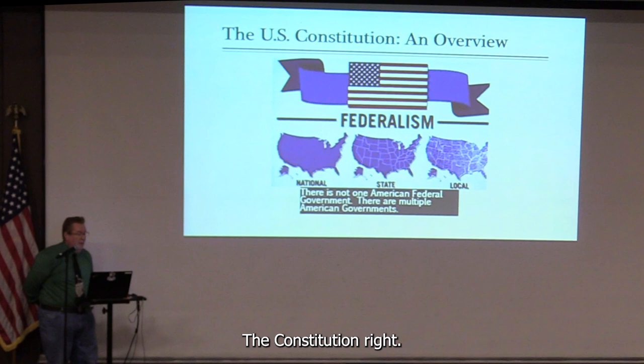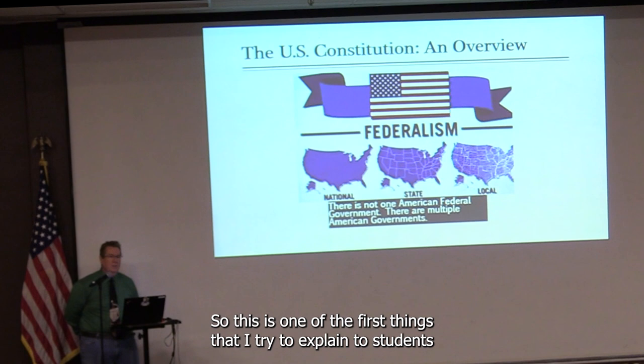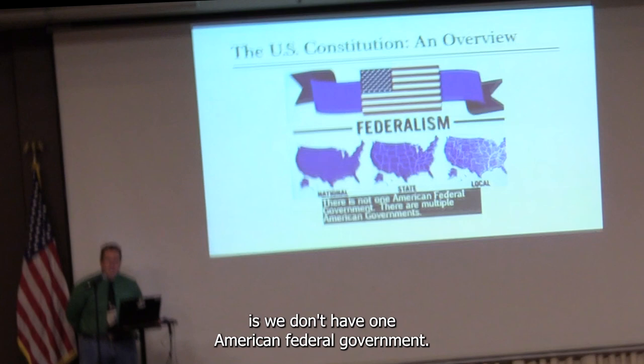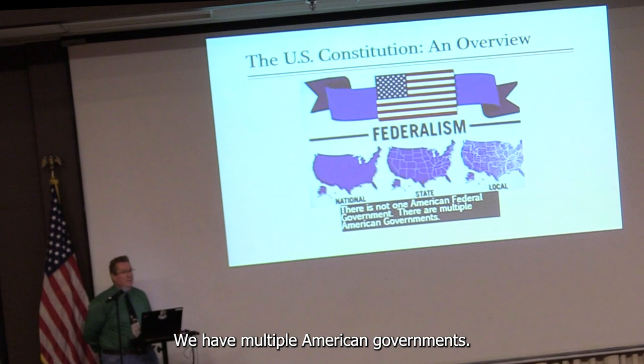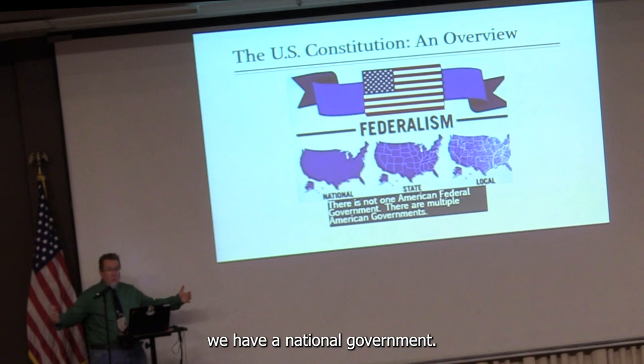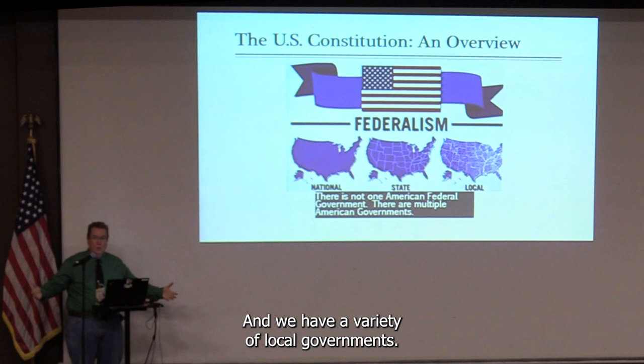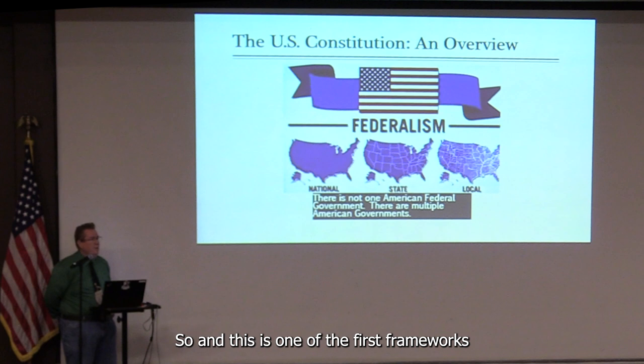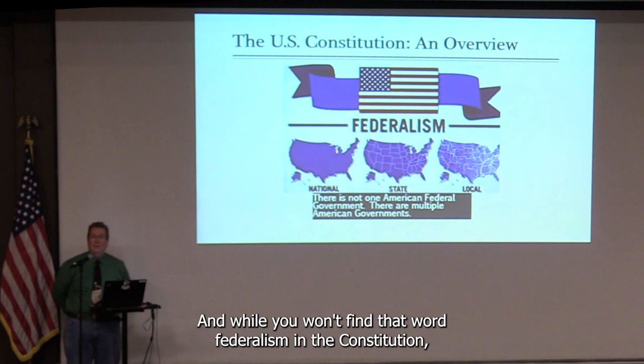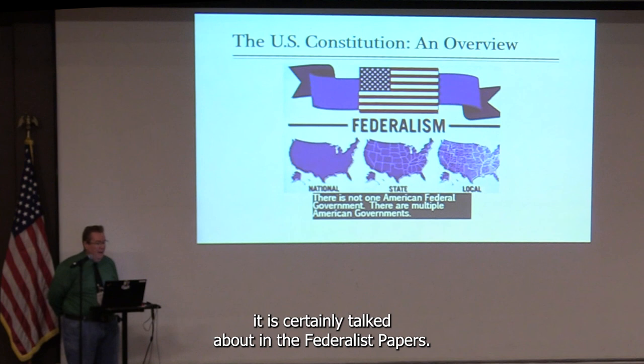The Constitution sets up a framework of multiple governments. We don't have one American federal government — we have multiple American governments. In broad terms, we have a national government, state governments, and a variety of local governments. While you won't find the word 'federalism' in the Constitution, it is certainly discussed in the Federalist Papers, and the concept is recognized that there will be different governments with different responsibilities.